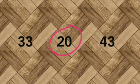33, 20, 43. 20 is smaller. Ok? इसलिए हमने 20 पर circle किया.